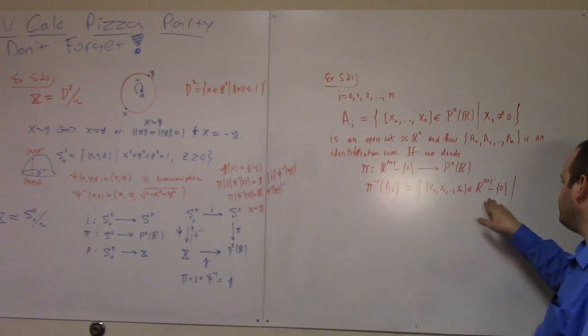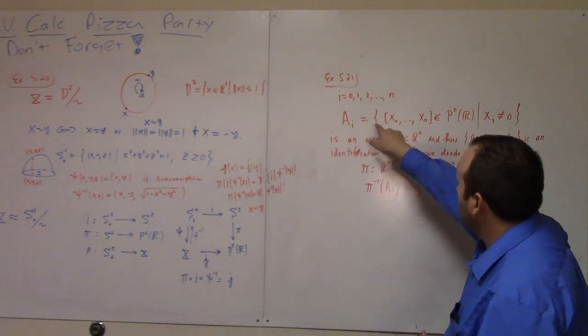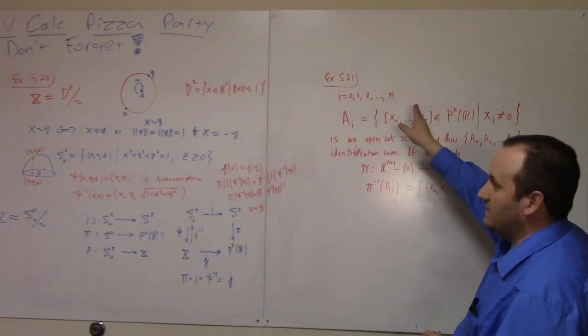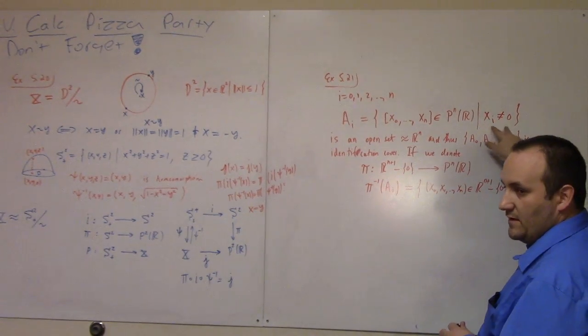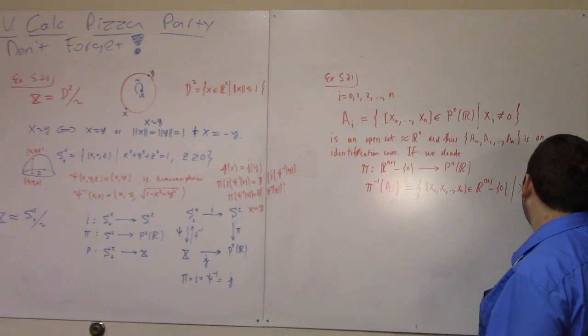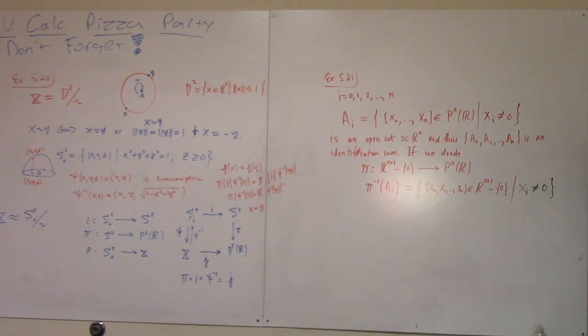So what's the condition on these? So we're looking at the inverse image of Ai. Ai is these equivalence classes, such that Xi is not equal to zero. So it's just that. I was thinking that, but I thought that was too simple to say. Nope. It was really that simple.